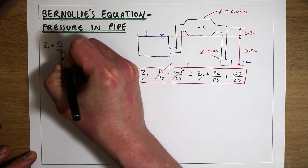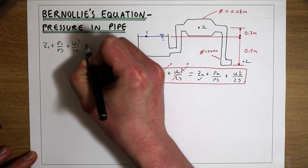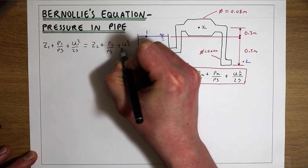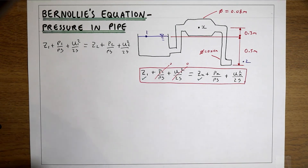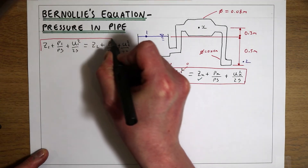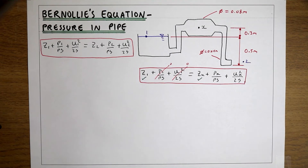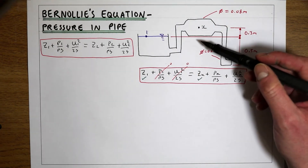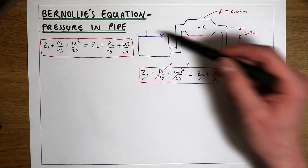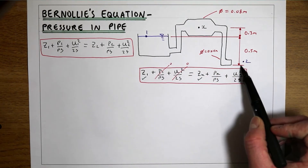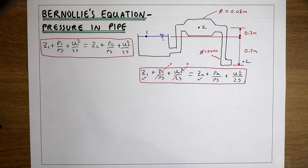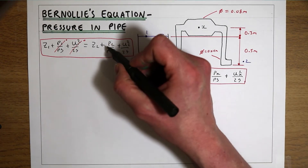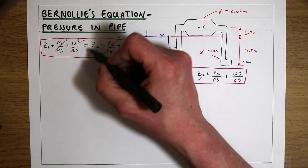We apply Bernoulli's equation between point 1 and point 2: Z1 + P1/ρg + U1²/2g = Z2 + P2/ρg + U2²/2g. In a system like this, we're only interested in the net difference in elevation between the two points — what happens in between doesn't affect the velocity. At point one there's no pressure and no velocity; at point two there's also no pressure since we're at atmospheric pressure, and no elevation since we're at the bottom of the system.